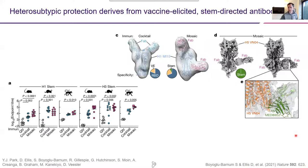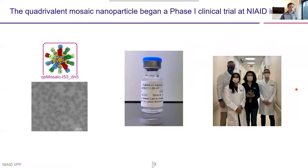This vaccine is now in phase one clinical trials, manufactured by the NIH and entered phase one at the end of May. We're really excited to see how this vaccine performs in humans in the face of pre-existing immunity against influenza virus, which the data I showed did not have — that was all in naive animal models.